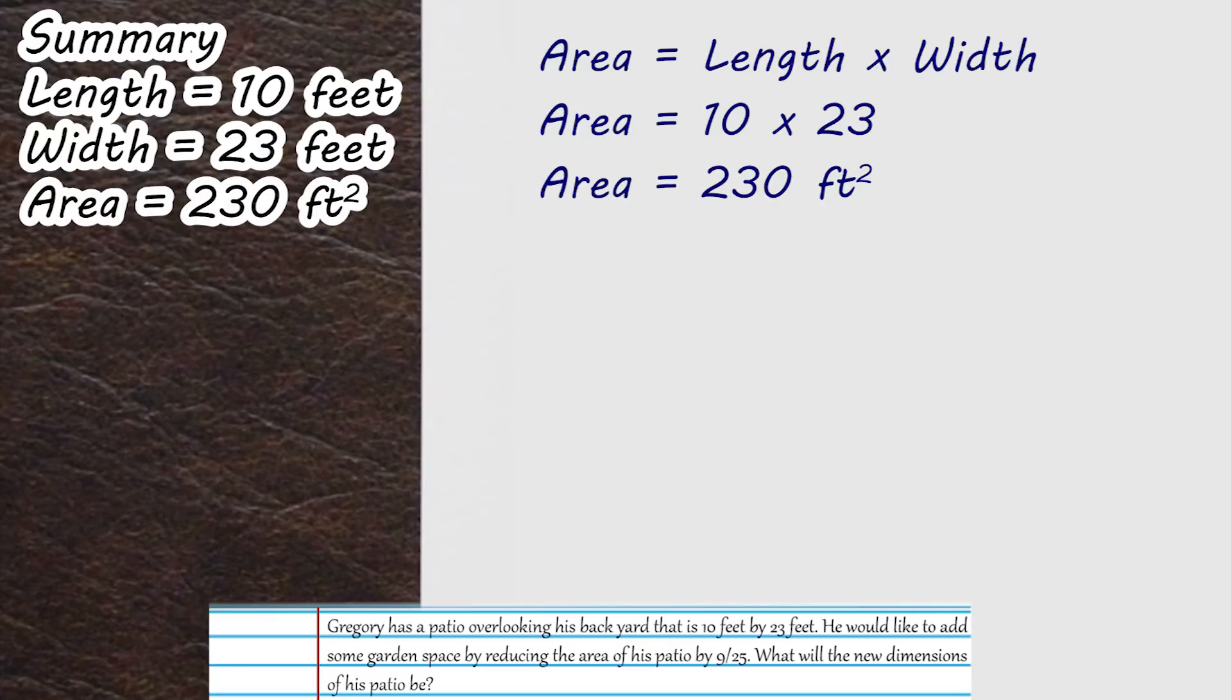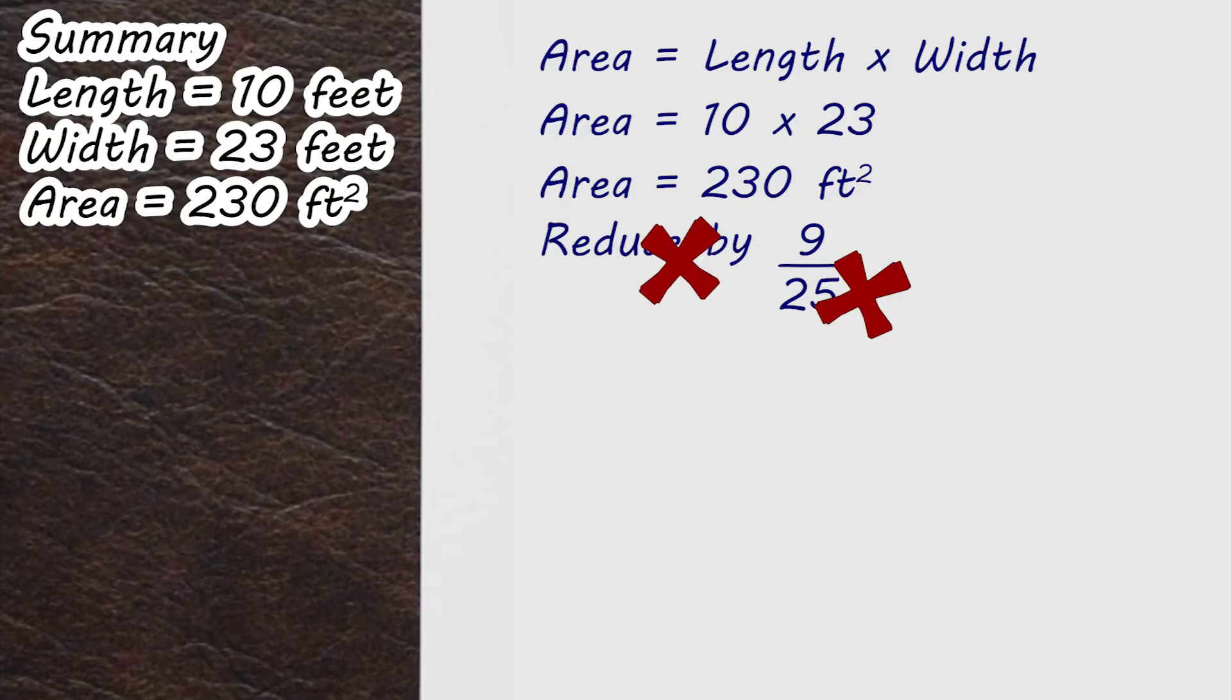Now what we want to do is reduce it by 9 over 25, which is a horrible way of wording things for two reasons. Firstly, the fraction - everyone hates fractions. Secondly, the use of reducing by 9 over 25 is ambiguous.